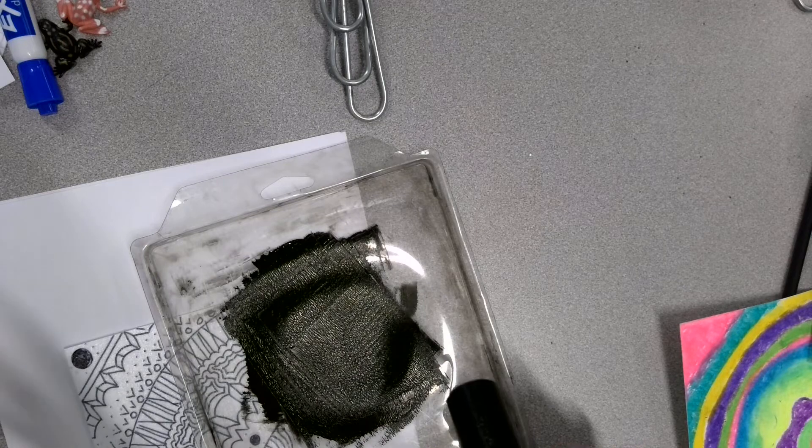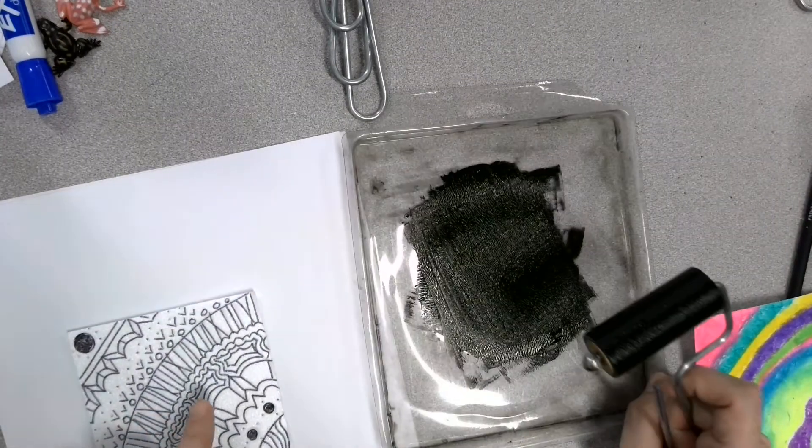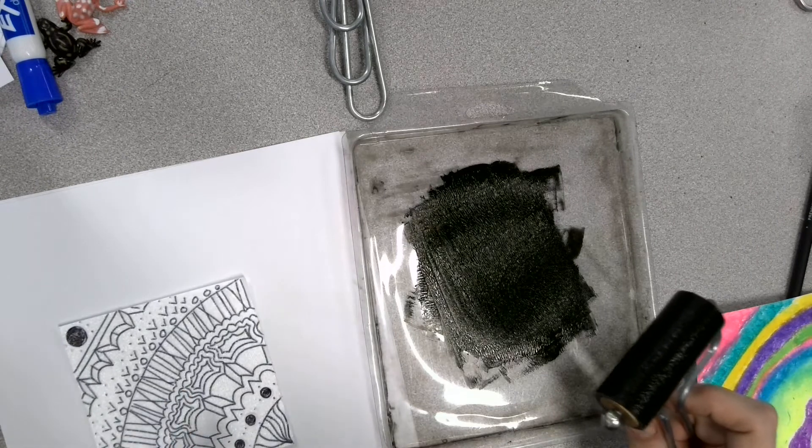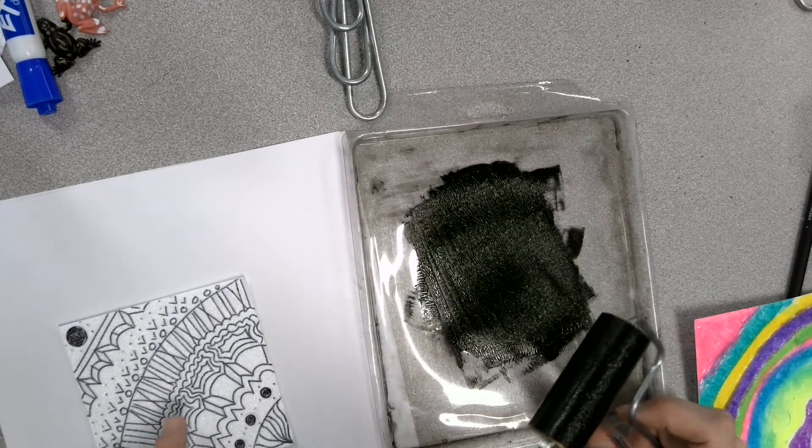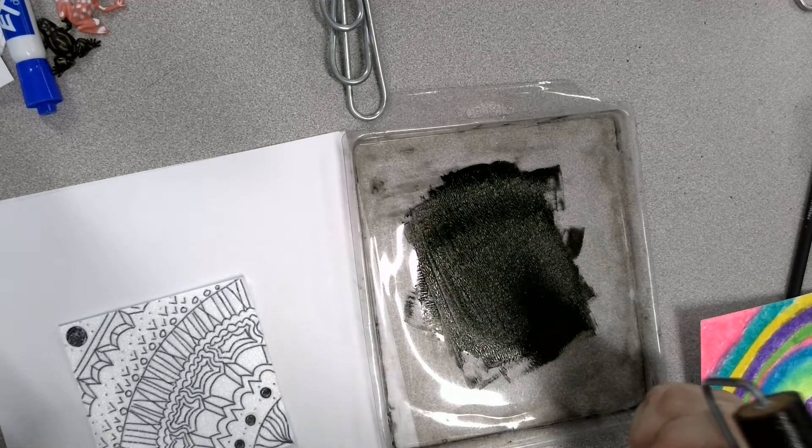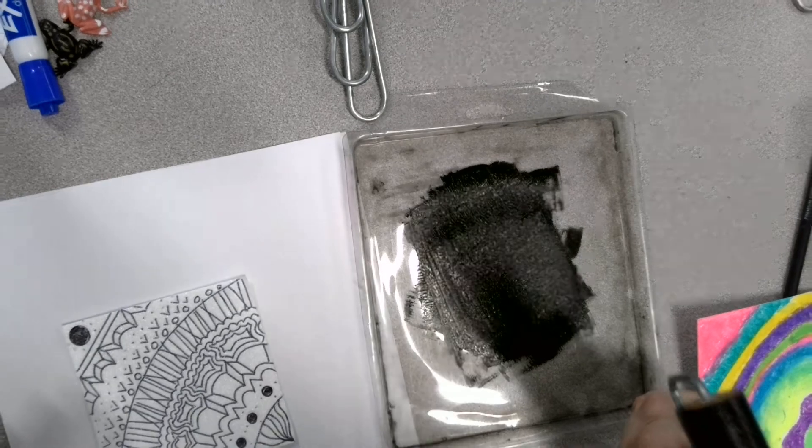If you have too much ink on your brayer, it's going to fill all the lines that you created. So what's going to happen in just a minute is all these black lines, because I used a black pen, they're going to be black, and the ink's going to be black, and I'm not going to be able to see my design, okay?